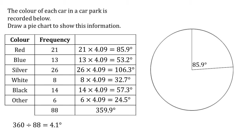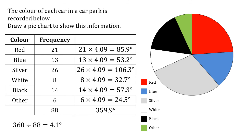We then measure our first slice: 85.9 degrees for the red cars, measuring around from the top. From the end of the red sector, we measure 53.2 degrees for the blue one, then 106.3 and so on. We check that the last slice equals 24.5 degrees to confirm we've measured them all correctly. We then colour in each sector and add the key, and there we go — our completed pie chart.